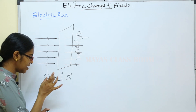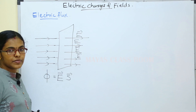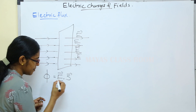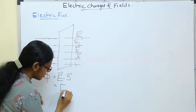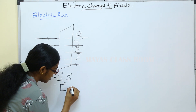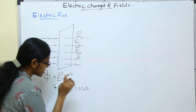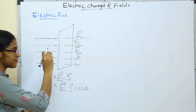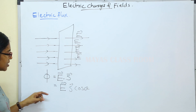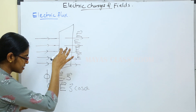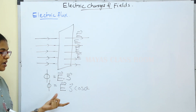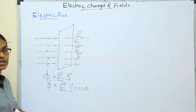Electric flux φ is equal to E dot S. This can also be written as E times S cos θ. The equation is φ = E · S.